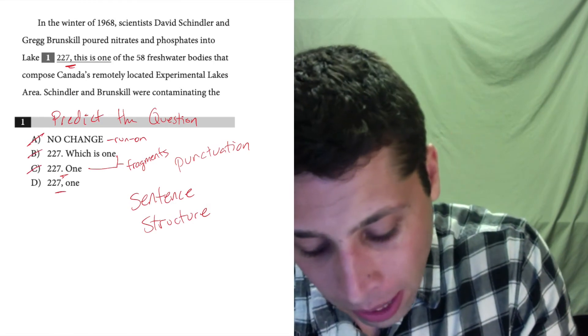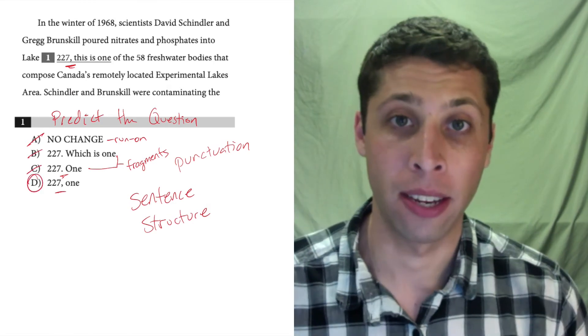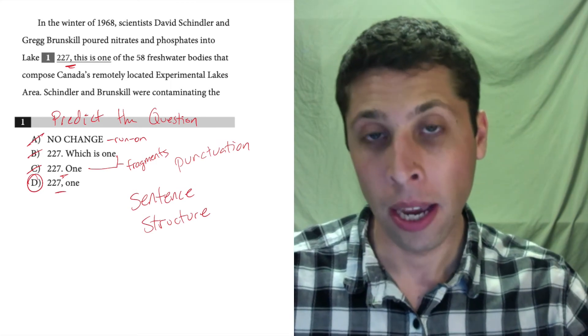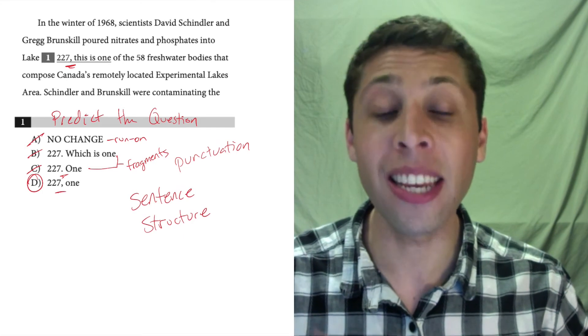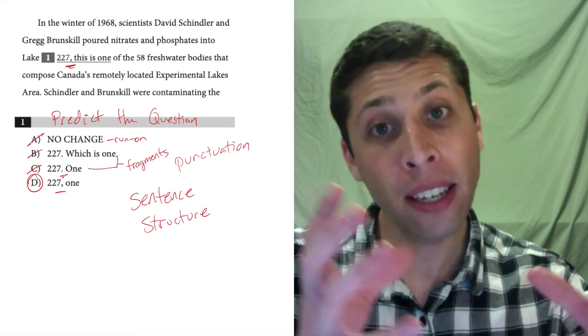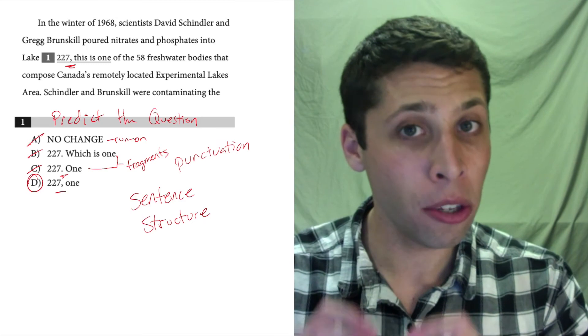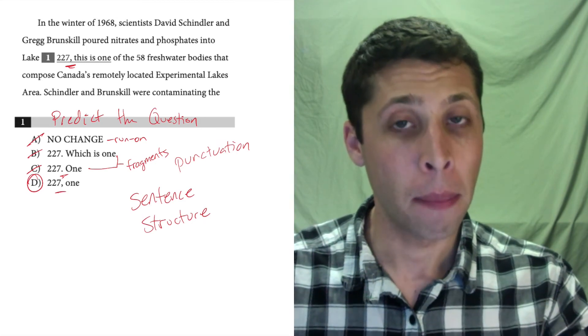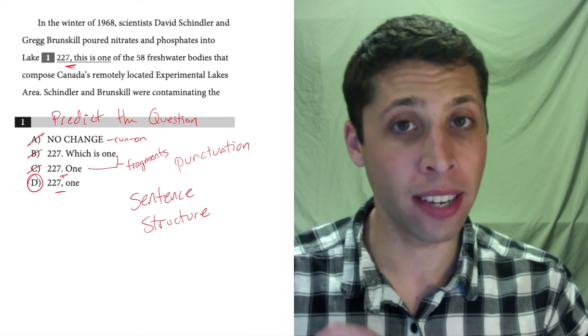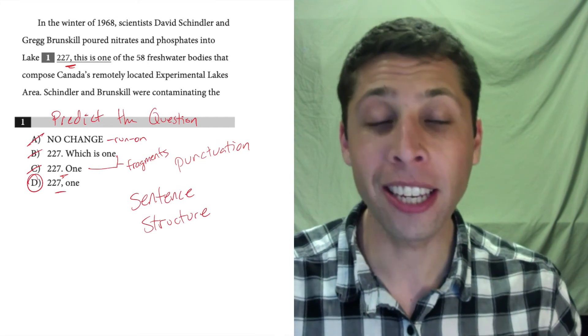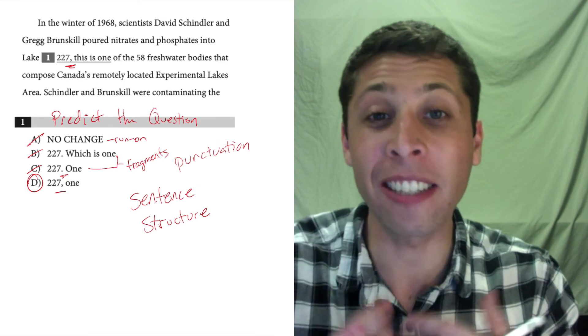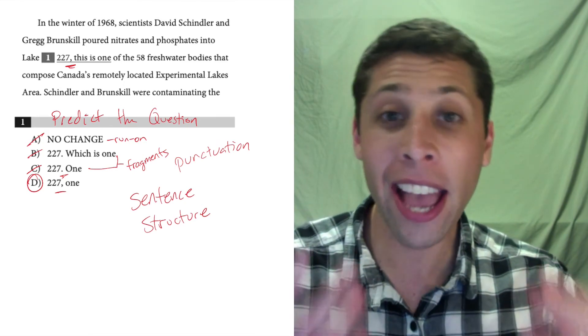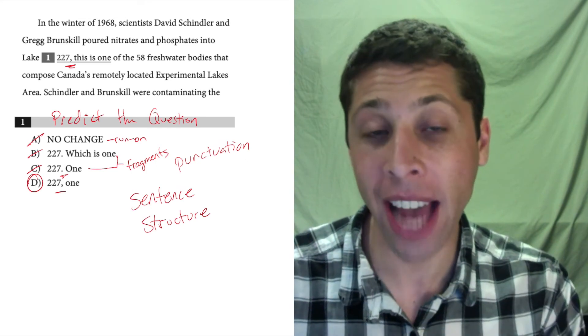So what's going to happen is that choice D is correct because it fixes the run-on not by completely separating the two sentences, but by turning the second sentence into a fragment and then attaching that with a comma. So you can't use only a comma to join two complete sentences. But one of the most common fixes on the SAT is to turn one of the sentences into a fragment, a dependent clause. It's just like a hanger-on, and we can hang it on with just a comma. That is okay.